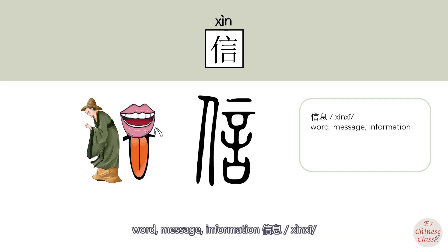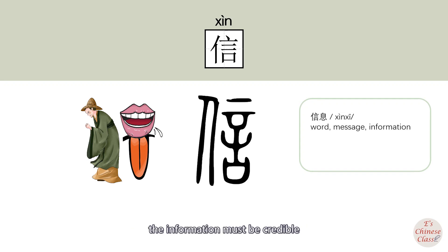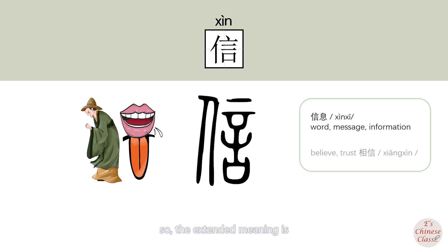The original meaning of 信 is word, message, information — 信息. The information must be credible, so the meaning evolved to believe and trust — 相信.